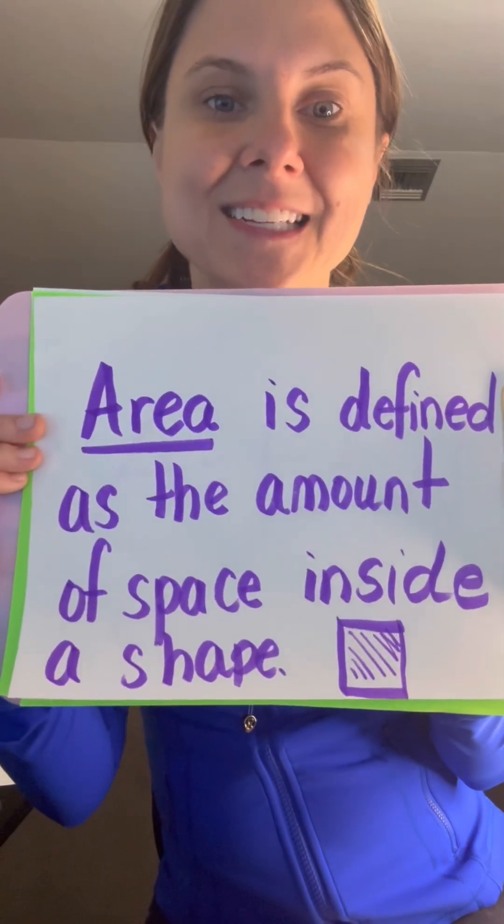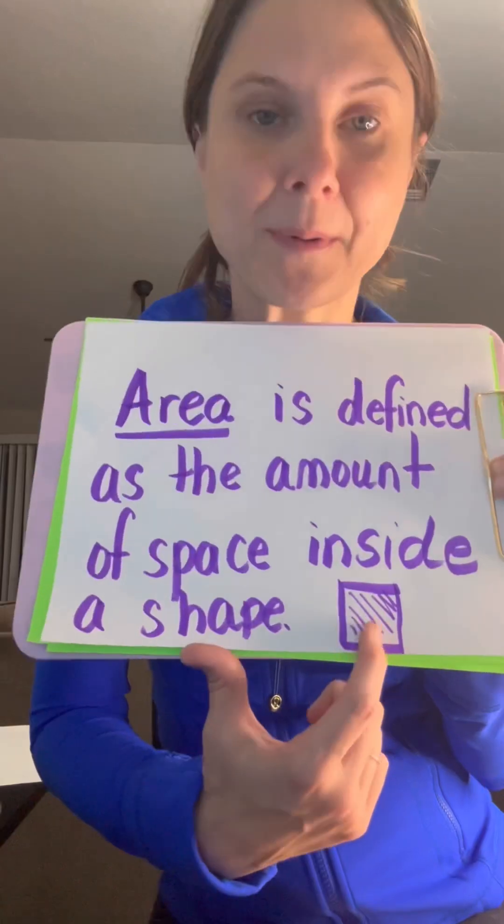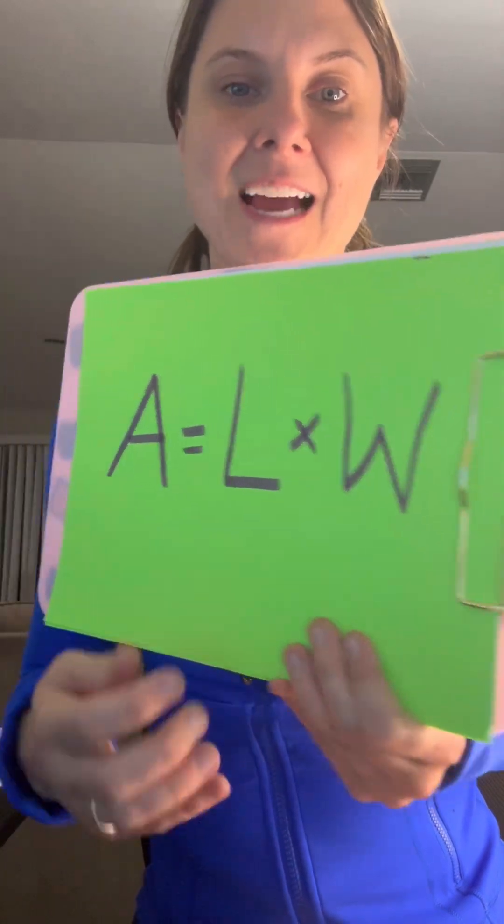Area is defined as the amount of space inside a shape. So it's the measurement of the inside. The formula is area equals length times width.